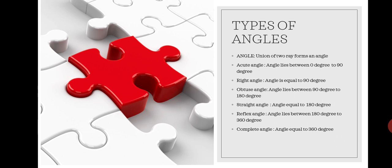Types of Angles. The union of two rays forms an angle. Acute Angle: angle lies between 0 degrees to 90 degrees. We call this type of angle an acute angle.